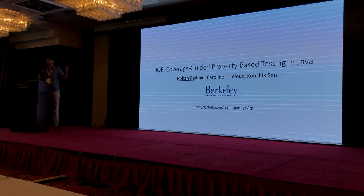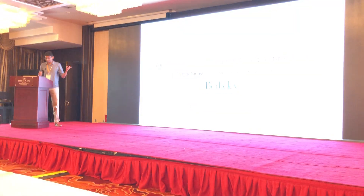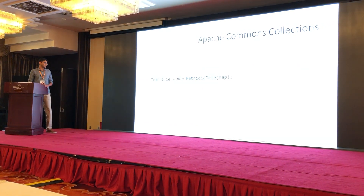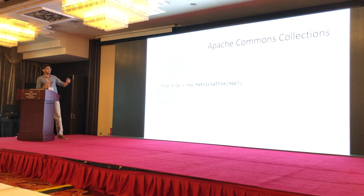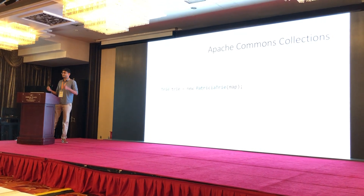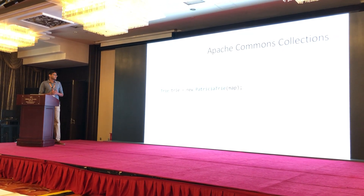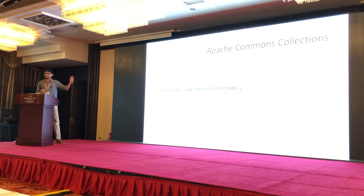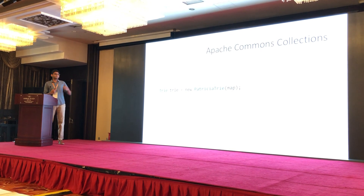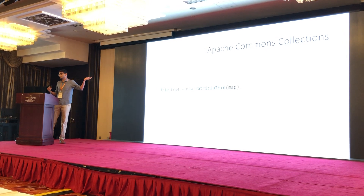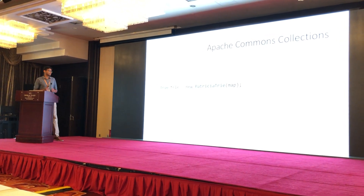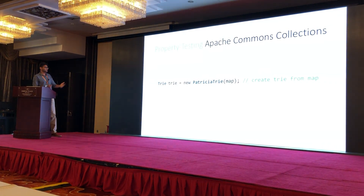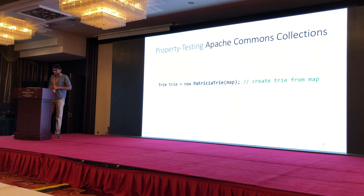Let me give you an example of what property testing looks like. Let's say you wanted to test a class from Apache Commons, which is a trie data structure. A trie is nothing but a set of key-value pairs, and you can construct a new trie — in this case a Patricia trie, which is a specific implementation — from an input map, like a JDK java.util map object. The trie will have the same keys and same values as the input map. So how do you test some properties about this trie?